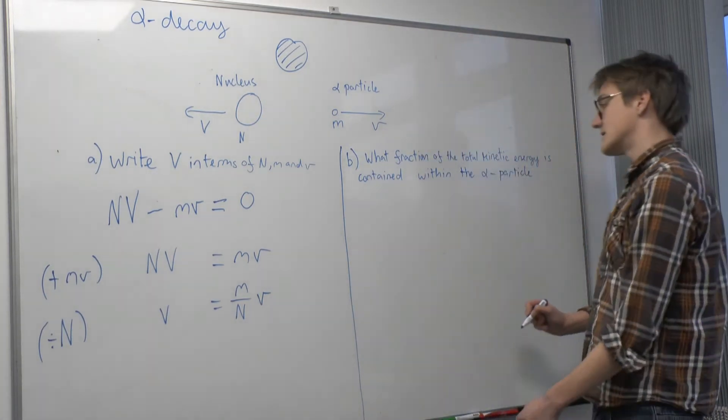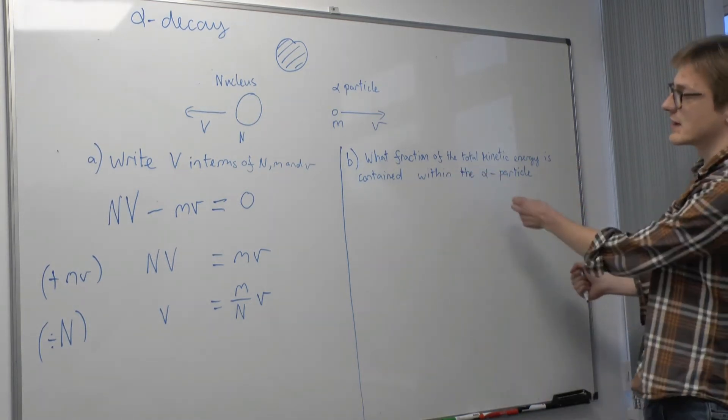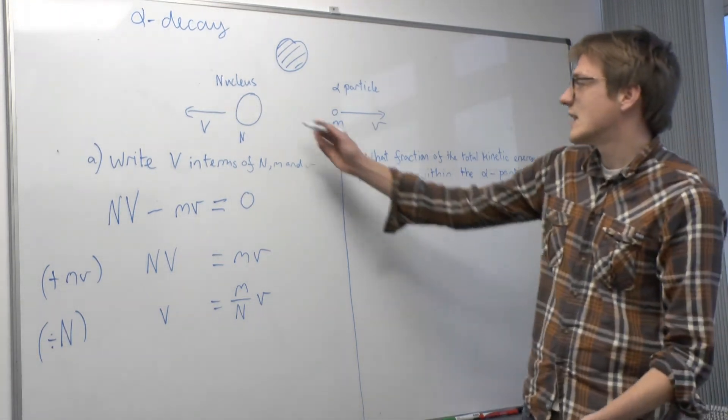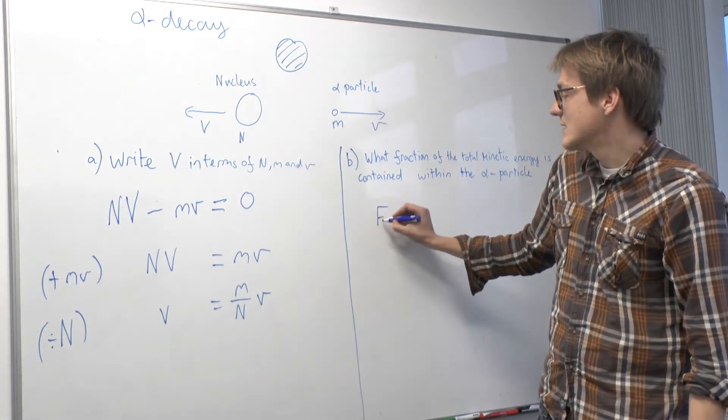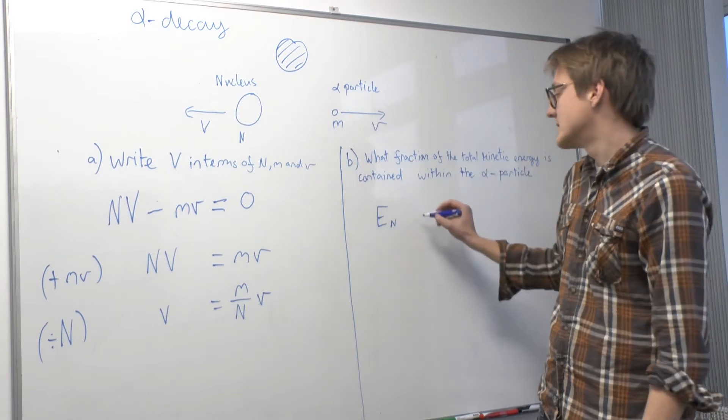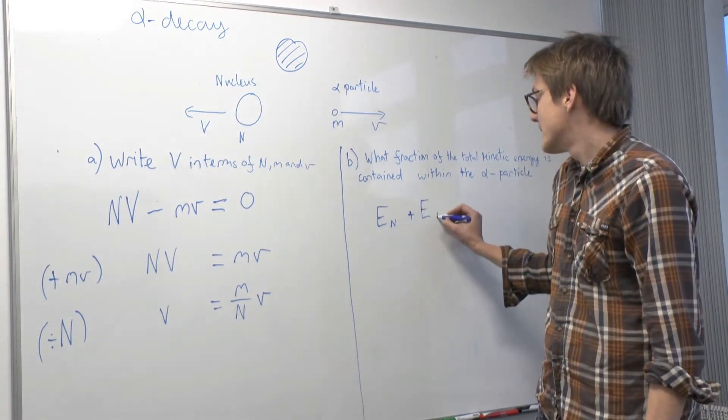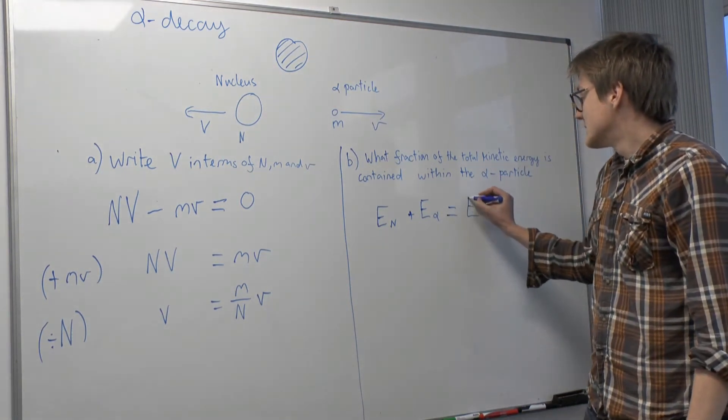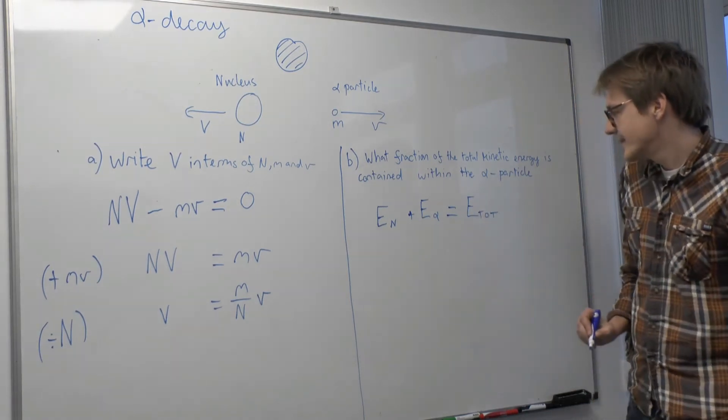Now the next part of this question is asking what fraction of the total kinetic energy is contained within the alpha particle. So the total kinetic energy of the system is the kinetic energy of the nucleus, E nucleus, plus the kinetic energy of the alpha particle equals E total.